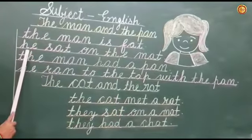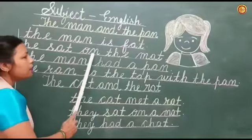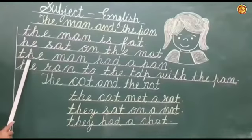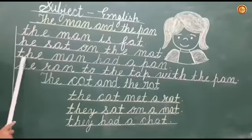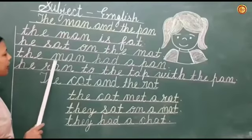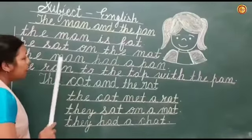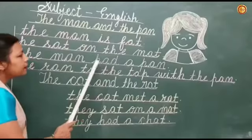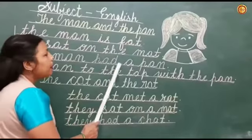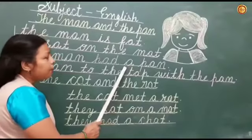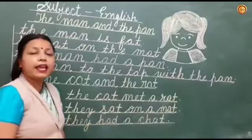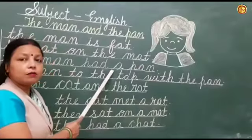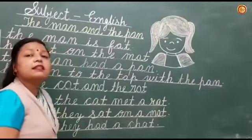Then we read it like this: He sat on the mat. Third line is T-H-E, the. M-A-N, man. M-A-N, man. H-A-D, had. H-A-D, had. A — what is this 'a'? We have learnt about sounds and the sound of A is 'a', but here we will read it 'a', because when A comes alone, then we will speak it 'a'.